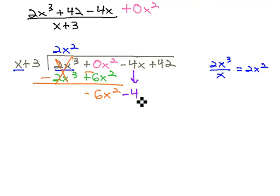Bringing down the next term, the negative 4x, allows us to repeat the process. Negative 6x squared, divide out an x, leaves us with negative 6x.